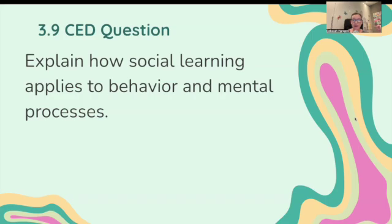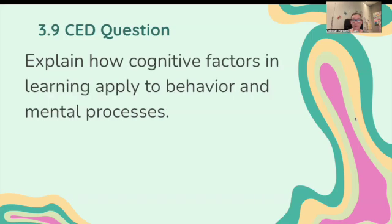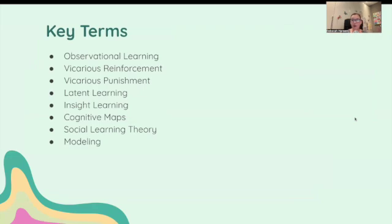First question was explain how social learning applies to behavior and mental processes. And the second one is explain how cognitive factors in learning apply to behavior and mental processes. So we're going to go over a few key terms for these two questions. And like I said, I go into a whole lot more detail about that on separate videos.